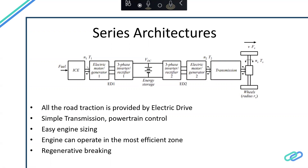Since the engine is not connected directly to the wheels, it can operate at whatever speed it wants. The engine can be operating at the most efficient spot even if the vehicle is not moving. For example, if the battery is at zero, you can just start the engine while the vehicle is not moving, and then when the battery charges enough, you can start the vehicle.